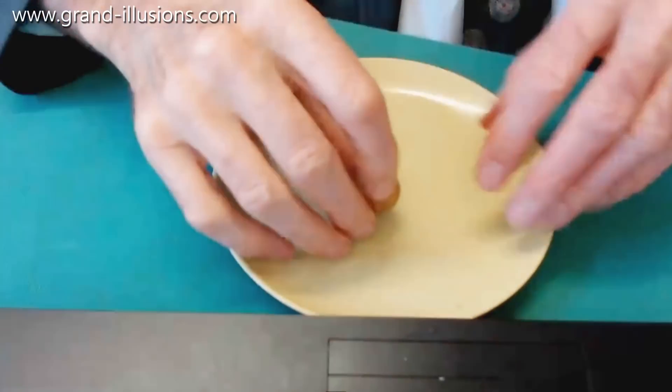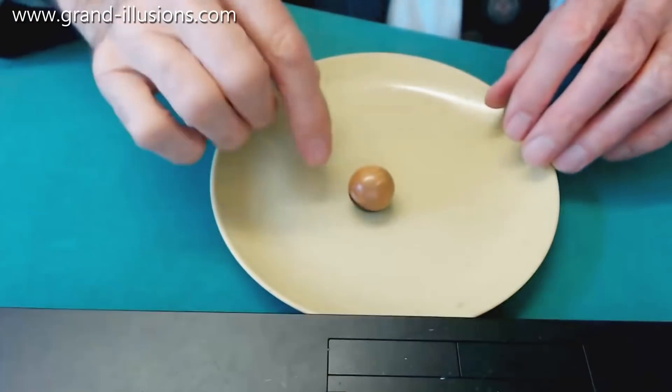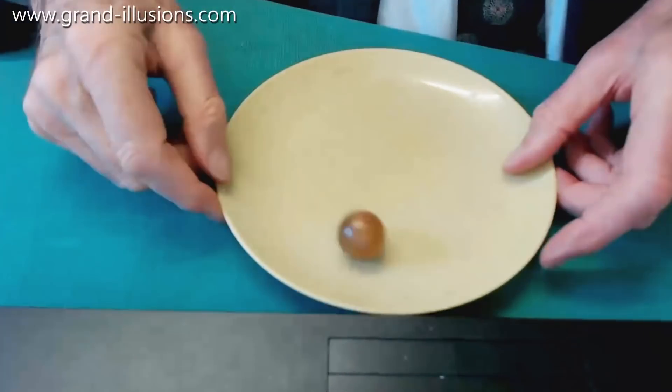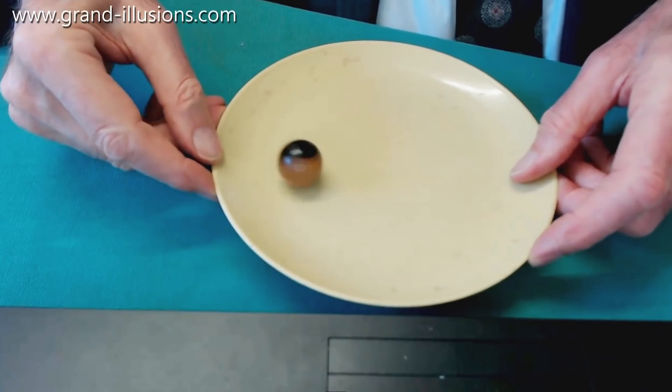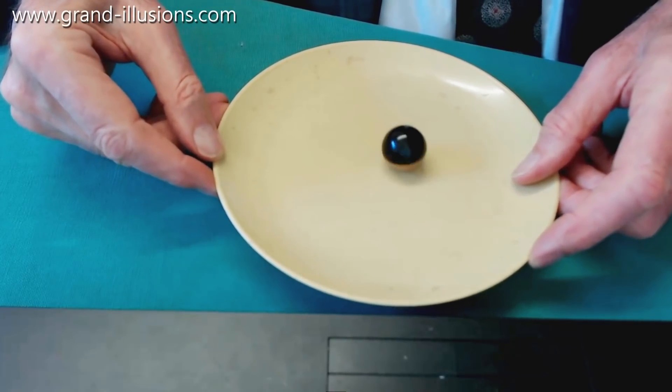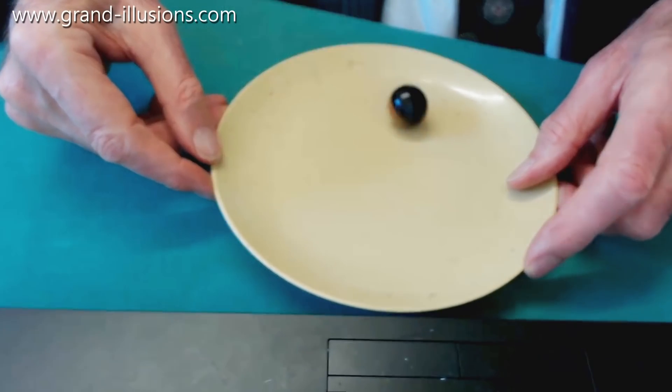If I spin it, start it like that, and it wants to stay like that because it's heavy at the bottom. Give it a good spin, and it will usually turn upside down as tippy tops do. Now it's spinning with the black side up, that's the heavy side.